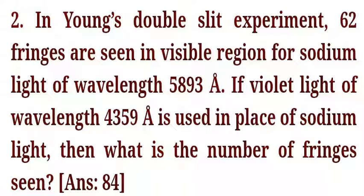In Young's double slit experiment, 62 fringes are seen in visible region for sodium light of wavelength 5893 angstrom. If violet light of wavelength 4359 angstrom is used in place of sodium light, then what is the number of fringes seen?